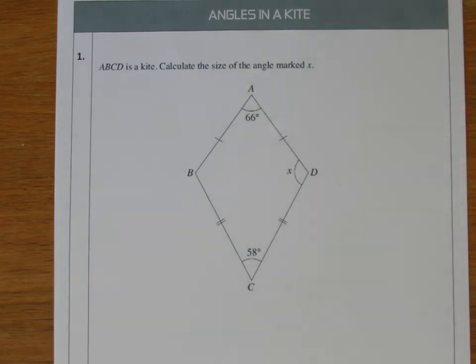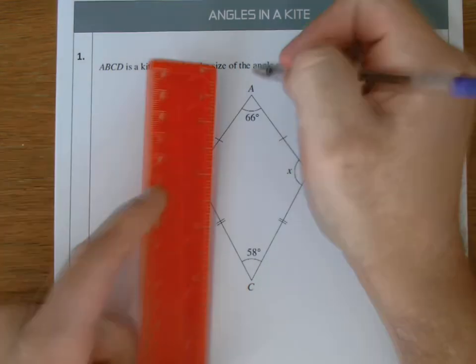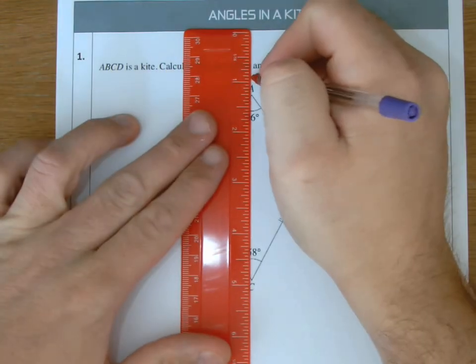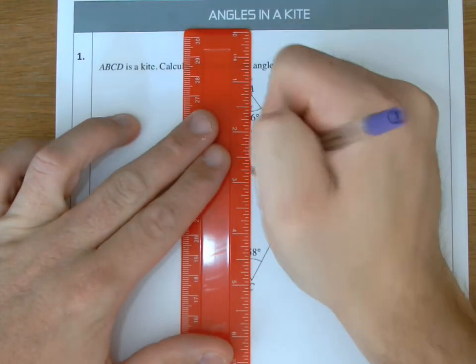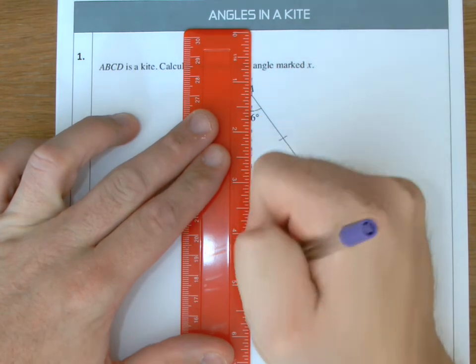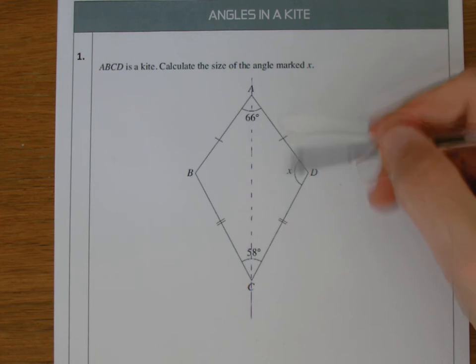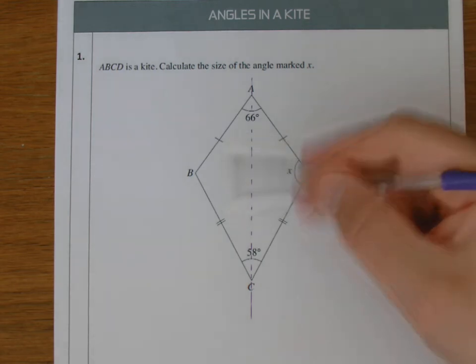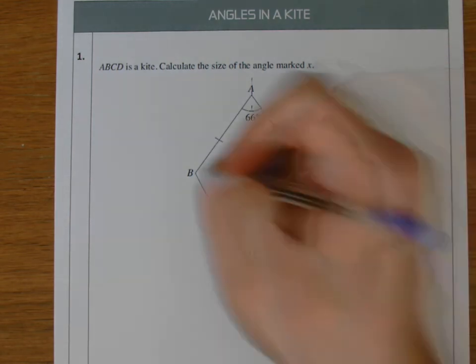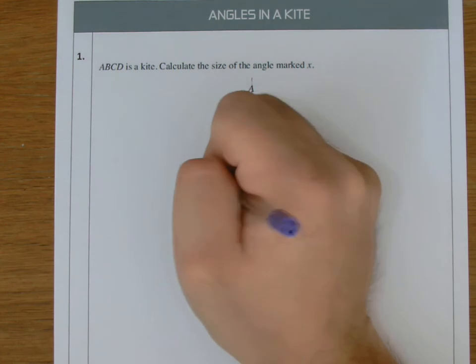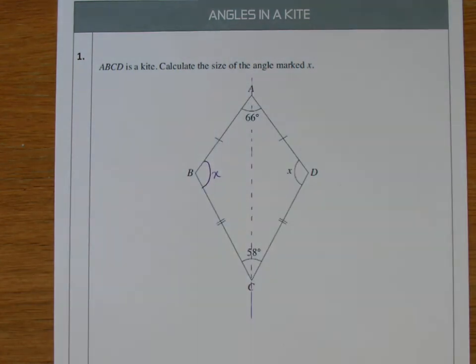Now what's good about a kite is that it's got one line of symmetry going down the center. I'll just illustrate that for you now by showing you - there's the line of symmetry. So basically this side here is a reflection of that side. So if that's the case, you can also say that this angle is also X. So that angle is identical to this angle.